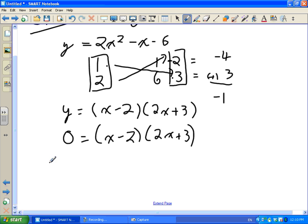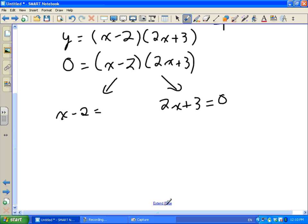So what I'm going to do is I'm going to solve for two answers. I'm going to split them up. x minus 2 equals zero. And 2x plus 3 equals zero. So I've split this. I'm going for two answers now.